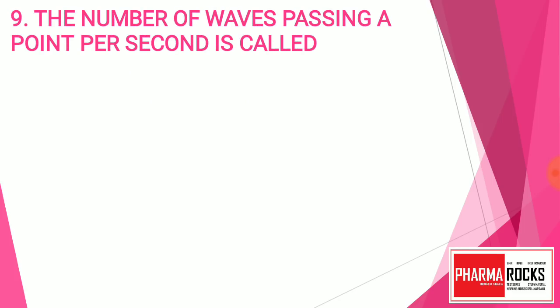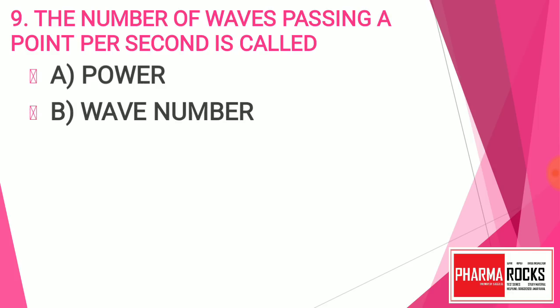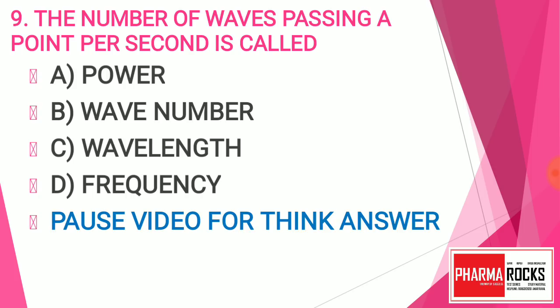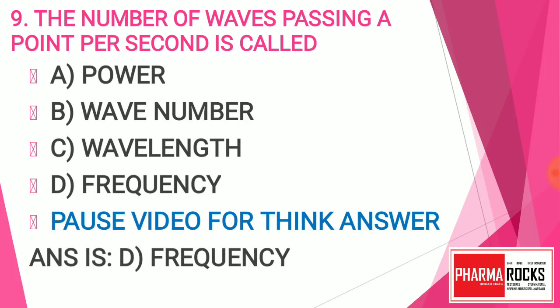Question number nine: The number of waves passing a point per second is called — Option A: Power, Option B: Wave number, Option C: Wavelength, Option D: Frequency. You have to find out what the number of waves passing a point per second is called. Pause the video to think. The answer is D — Frequency. Frequency is the number of waves passing a point per second.